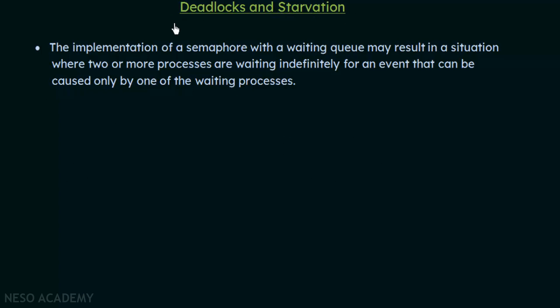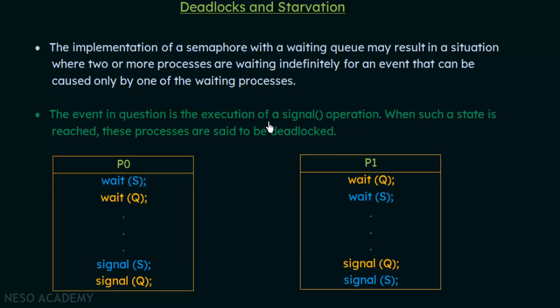The implementation of a semaphore with a waiting queue may result in a situation where two or more processes are waiting indefinitely for an event that can be caused only by one of the waiting processes. This can result in both processes waiting for each other, leading to a situation known as deadlock. The event in question is the execution of a signal operation, and when such a state is reached, these processes are said to be deadlocked.